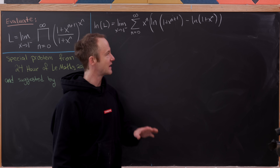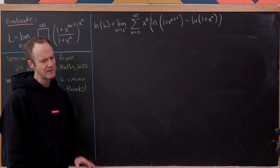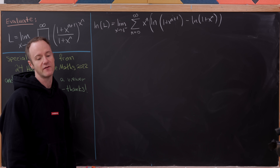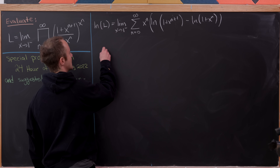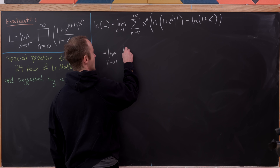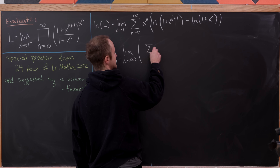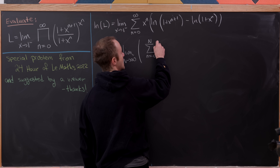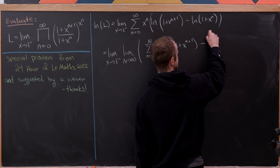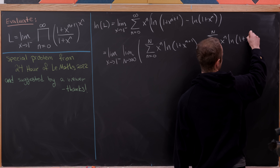Next we'd like to split this into two parts based on those two terms. But we can't really do that unless we take this infinite sum and write it as a limit of partial sums. So this equals the limit as x goes to one from below of the limit as capital N goes to infinity of the sum as n goes from zero to capital N of x^n times ln(1 + x^(n+1)), minus the sum as n goes from zero to capital N of x^n times ln(1 + x^n).